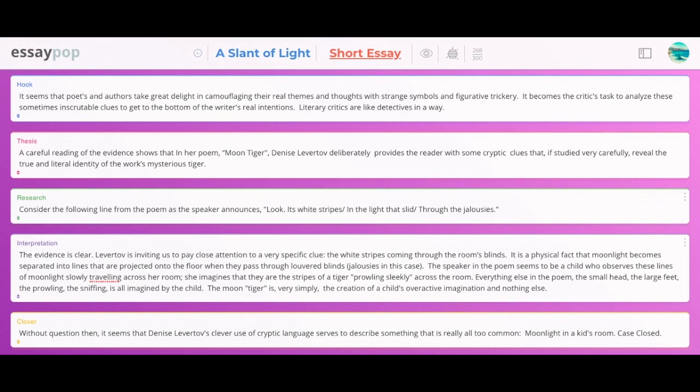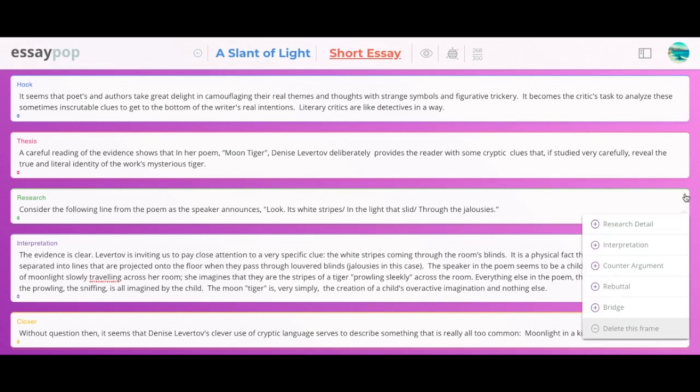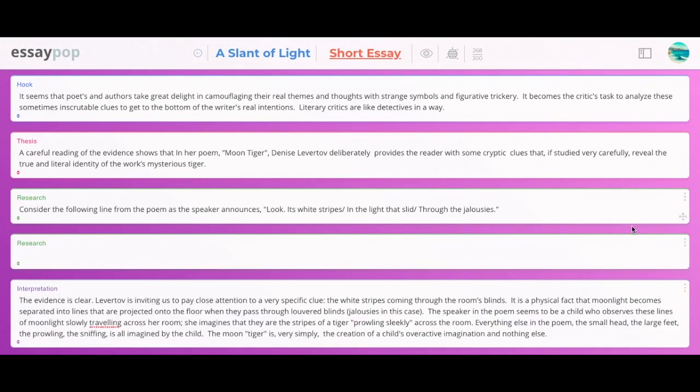But it should be noted that there's a few other things that EssayPop does that will be very helpful to you. For example, look up here—I only have 268 words out of 300. I want to make it to my minimum word count. One very simple way to do that, let's go to this icon here and add an element to your essay. I'll add a research detail. In this particular essay, I might add another line from the poem and analyze it further. That's going to get me to my word count for sure.